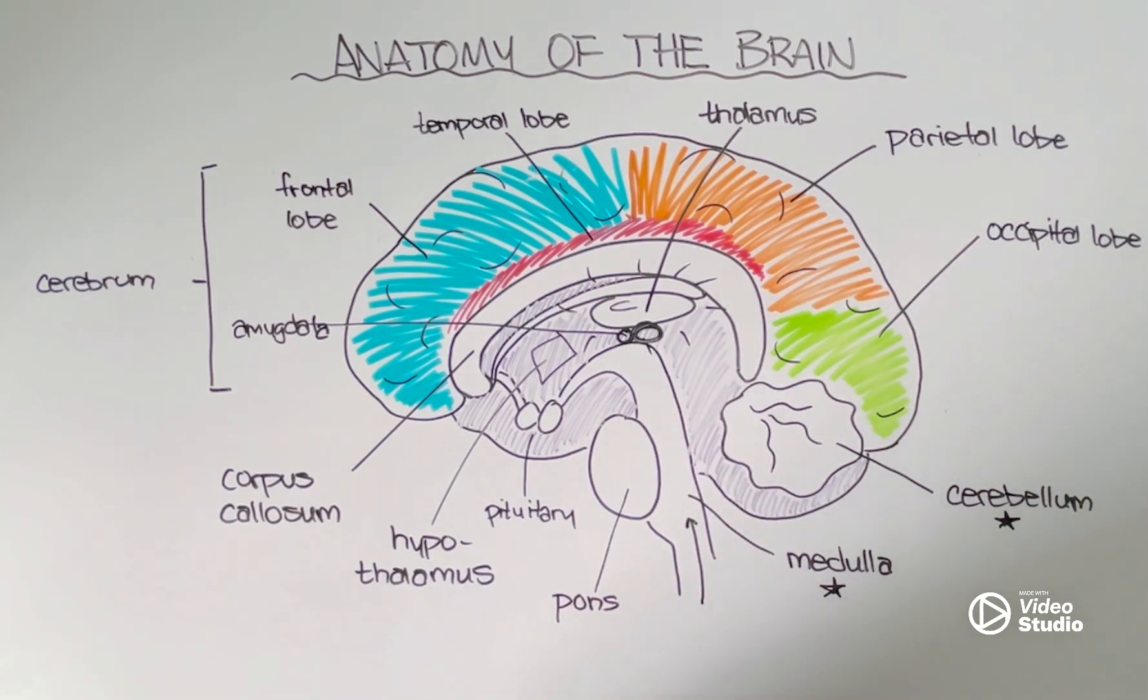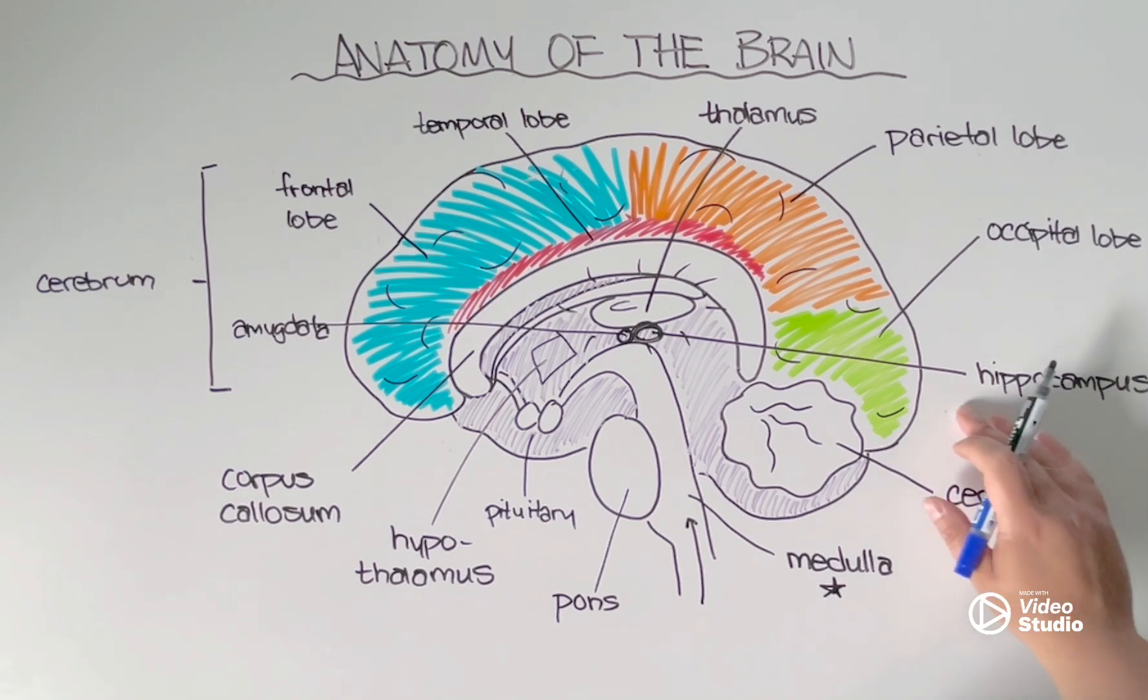And then also very closely associated with the amygdala is another region known as the hippocampus, which is responsible for encoding our memories. So, short and long-term memories, they take place here in the hippocampus. And again, it makes sense that it's so tightly connected with the amygdala because if you try and remember memories from long ago, the things that probably stick out the most are memories that have some sort of strong emotion connected with them. And we think that the amygdala plays an important role in helping to encode those memories in this region.